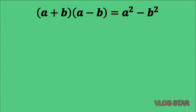So what is special about these two binomials? The two given take this form: the quantity a plus b times the quantity a minus b. These two binomials are almost alike — the only difference is that one of them contains the operation plus while the other one contains the operation minus. If this is the case, all you have to do is square each term of the given and separate them using a minus sign.